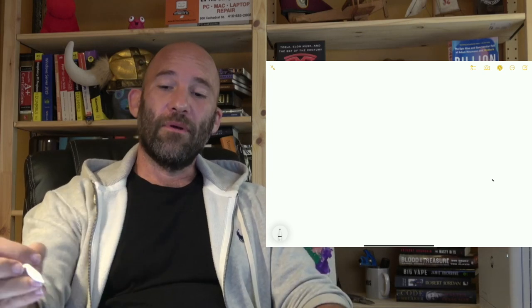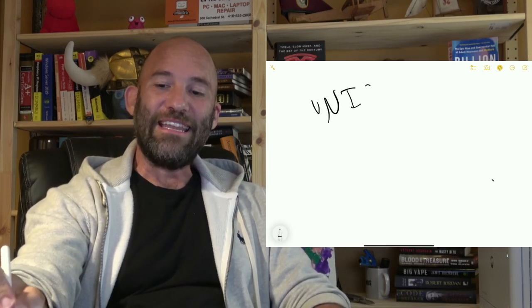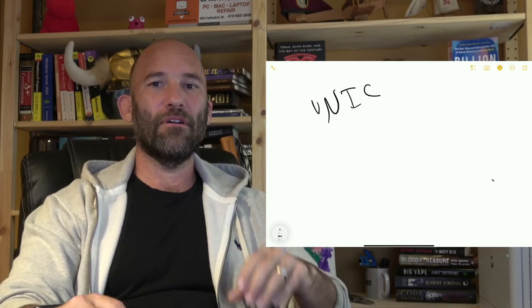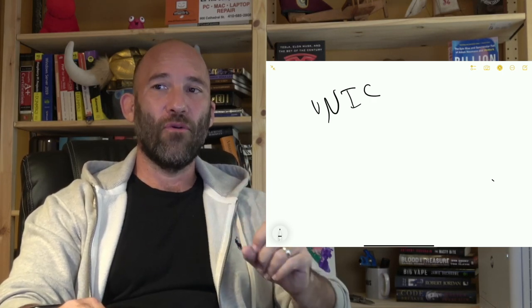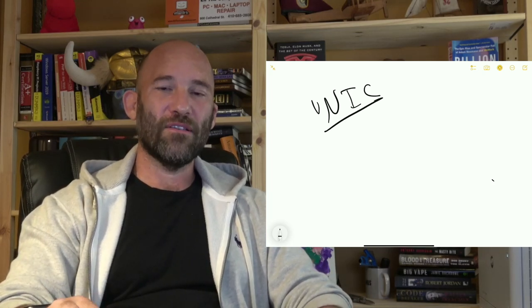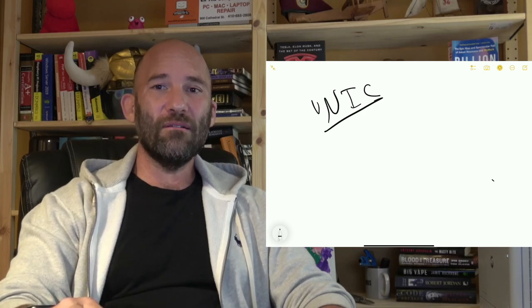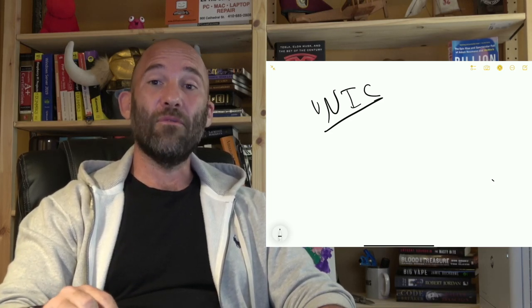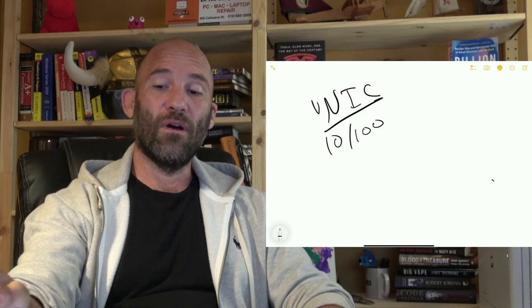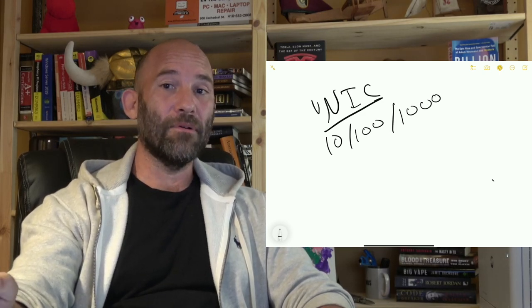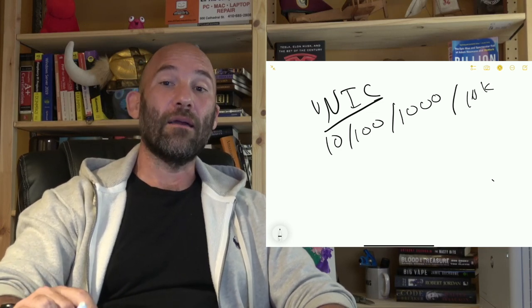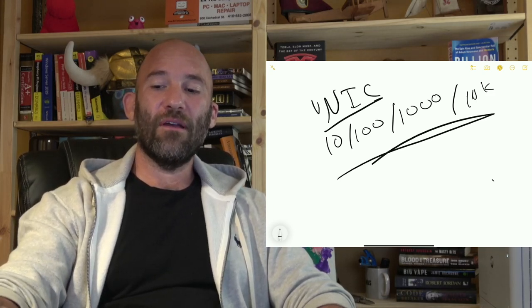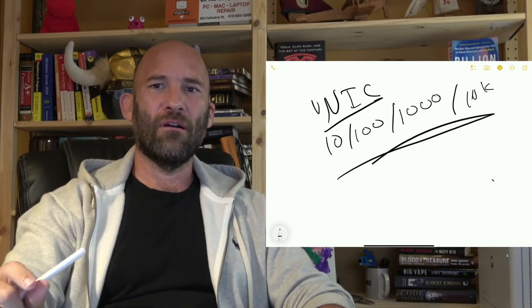The next piece of networking equipment we need to talk about is called a NIC — a network interface card. Whenever you see a desktop or laptop computer with an RJ-45 jack in it, that is your network interface card. In the modern world, when we talk about speeds, you can have a 10/100, or a gigabit per second card, or all the way up to a 10 gigabit per second networking card built into your computer.